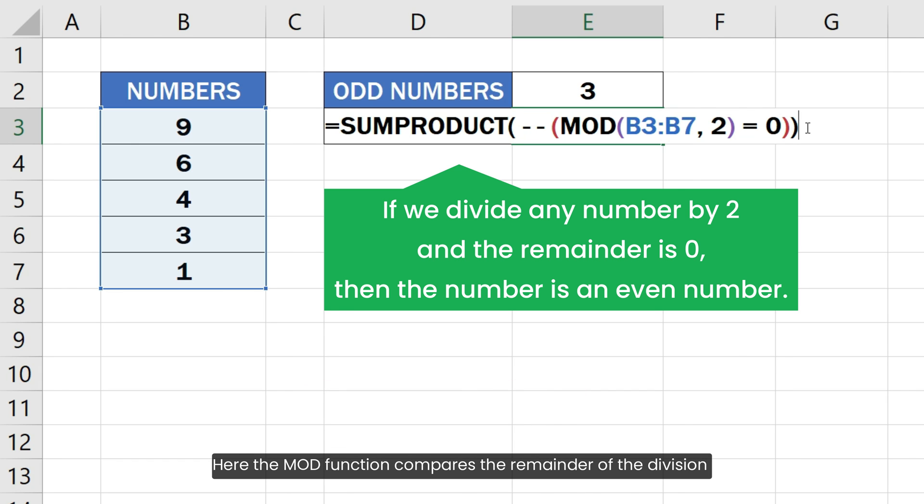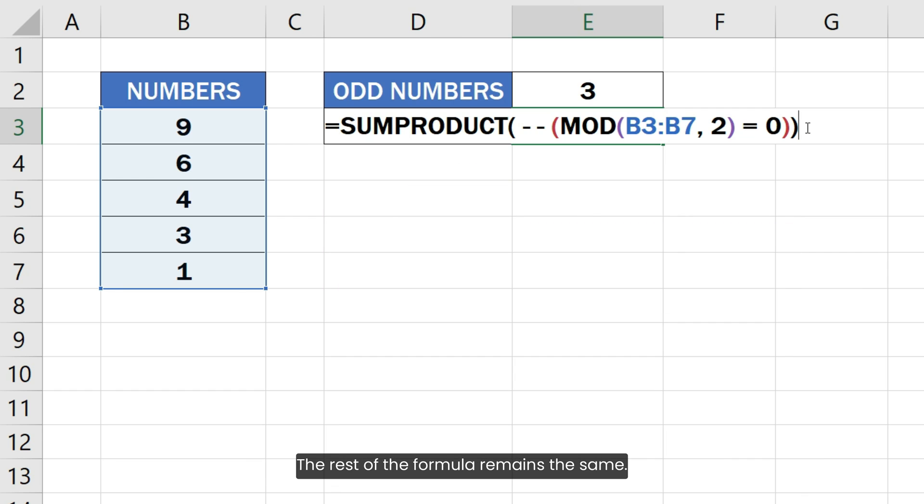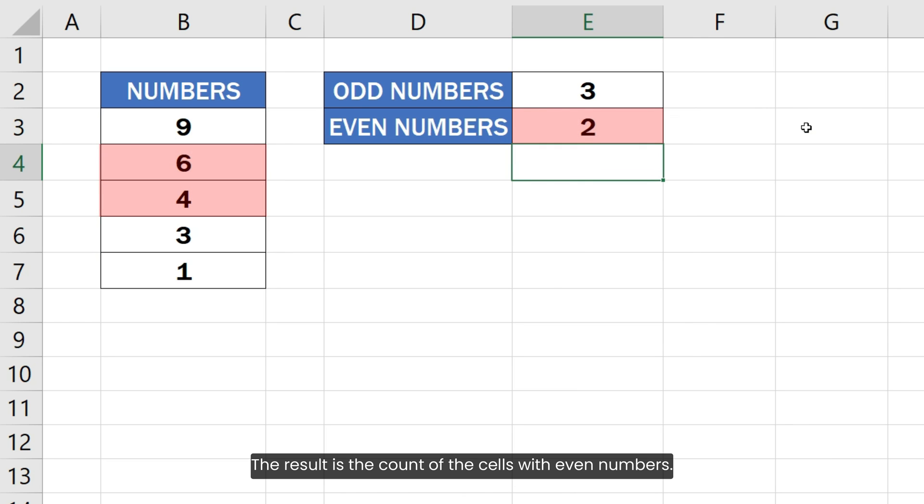Here, the MOD function compares the remainder of the division of the cell value by 2 with 0 to check if the number is even or not. The rest of the formula remains the same. The result is the count of the cells with even numbers.